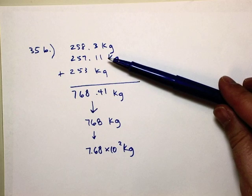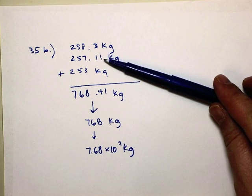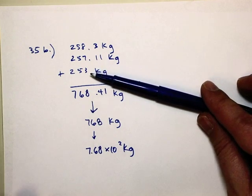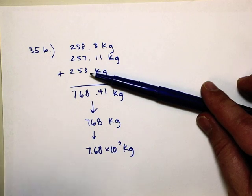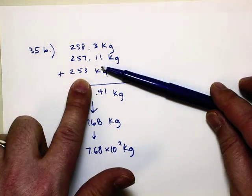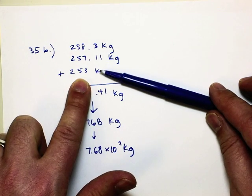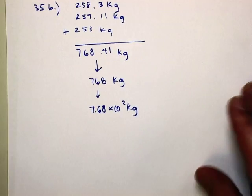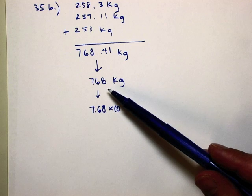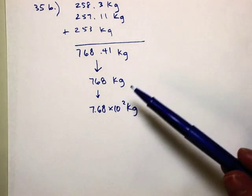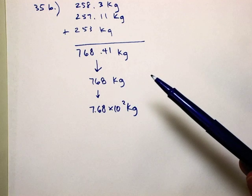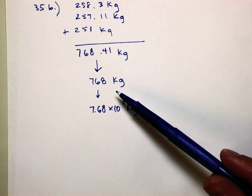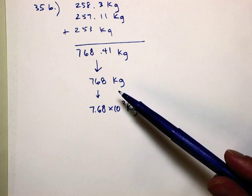So basically, if we look at these three measurements right here as being precise, less precise and way less precise, we have to base our answer on our worst piece of equipment. Because I don't know if this is 253.2 or 252.8 and it just rounded for me. I don't know. So that's why I can only go that far with my measurement to say it's 768. I don't know what the decimal is after it. Because my weakest piece of equipment I used only went to the ones place. So that's all I can report in an answer.